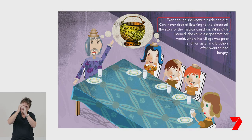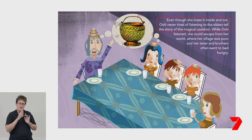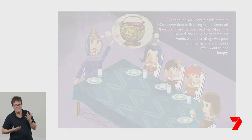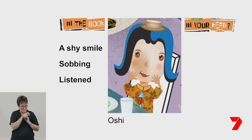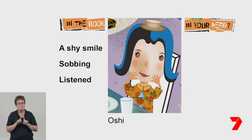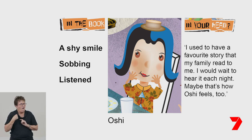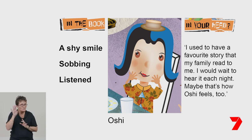Authors can use other ways to build a picture of the character. Look at the sentence: 'Even though she knew it inside and out, Oshii never tired of listening to the elders tell the story of the magical cauldron.' This gives you more information about how Oshii feels about the situation. These words might make you think about what you have done or seen in a similar situation. You may think, 'I used to have a favourite story that my family read to me. I would wait to hear it each night.' Maybe that's how Oshii feels too. All of these words tell me a lot about this character.